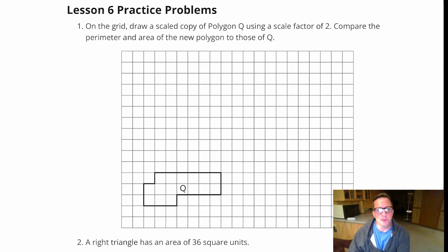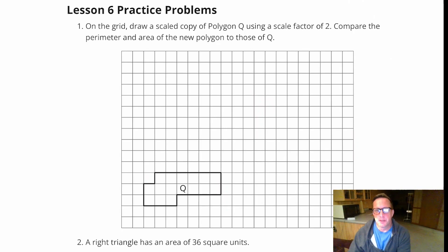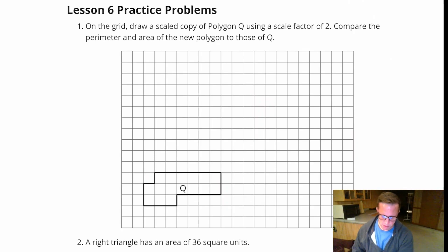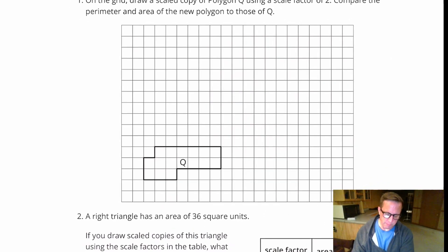Lesson 6 practice problems, number 1. On the grid, draw a scaled copy of polygon Q using a scale factor of 2. Compare the perimeter and area of the new polygon to those of Q. Alright, let's just go ahead and get to business here. Let's start scaling it.